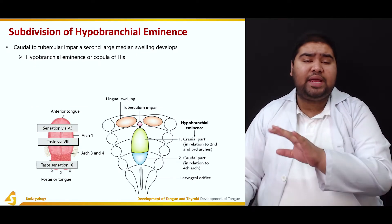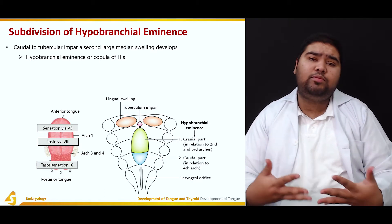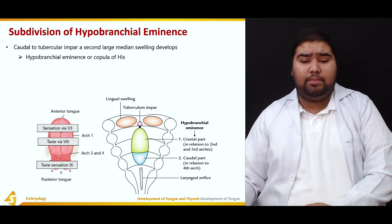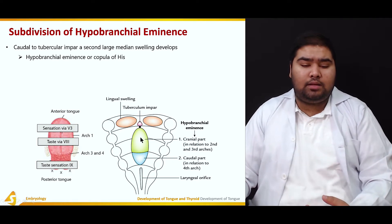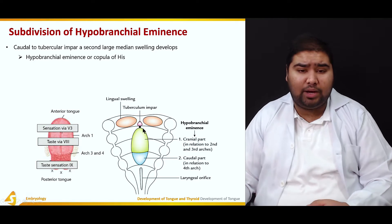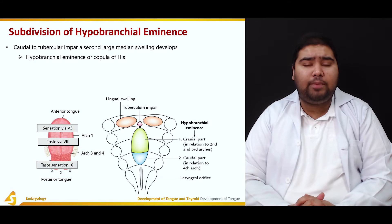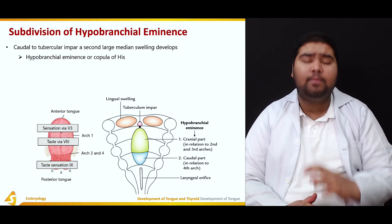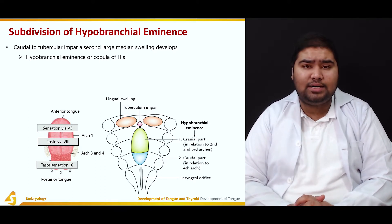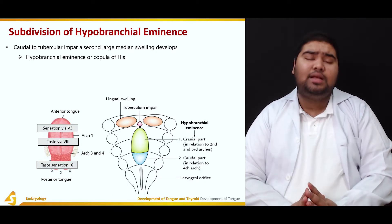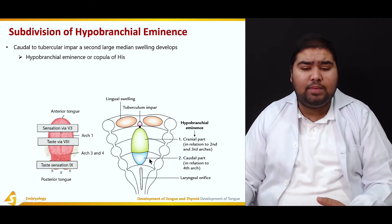This was all happening in the first pharyngeal arch, but the tongue is formed by the first four pharyngeal arches. So let's see the contribution of the second, third, and fourth pharyngeal arches. Caudal to the tuberculum impar, a second large median swelling appears, known as the hypobranchial eminence or copula of His. The first median swelling is the tuberculum impar in the first pharyngeal arch, while in the second, third, and fourth pharyngeal arches this large median swelling — the hypobranchial eminence or copula of His — appears in the floor of the primitive pharynx.